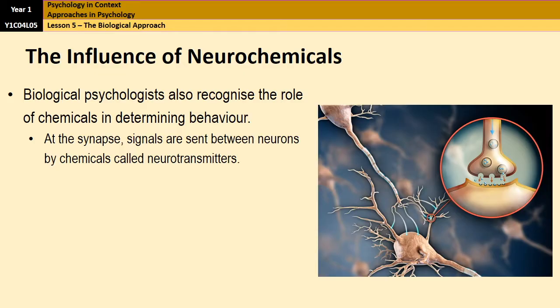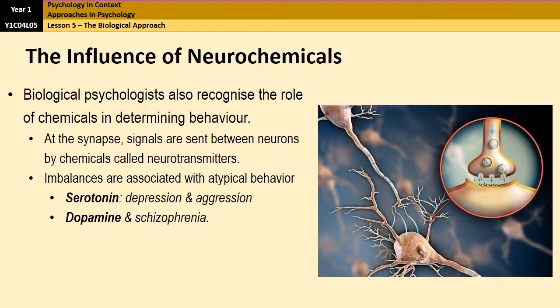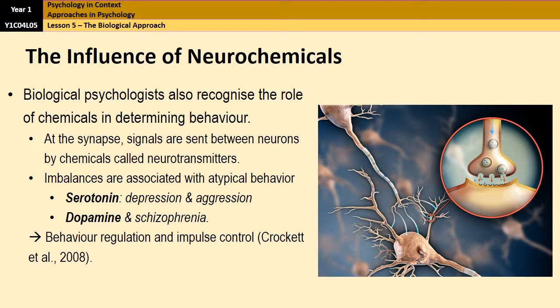Those neurotransmitters are responsible for a whole range of things. However, imbalances in those neurotransmitters are associated with atypical or abnormal behaviour. For example, having low levels of serotonin is associated with developing depression or with aggressive tendencies, whereas having high levels of dopamine — a different neurotransmitter — is linked to positive symptoms of schizophrenia. From research like that, into serotonin and aggression for example, researchers have concluded that serotonin is very important in behaviour regulation and impulse control — because if you don't have enough of it, you develop impulsive aggressive behaviour. That was Crockett et al. in 2008 who found that.